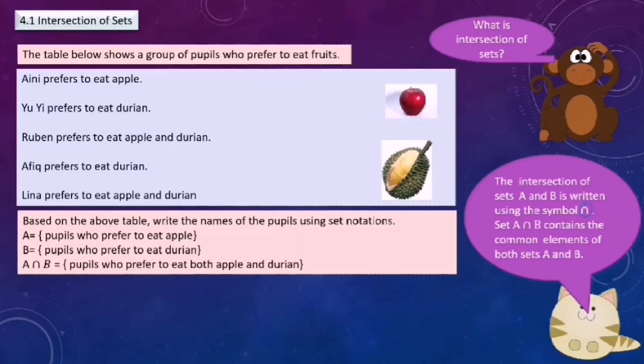We represent set A as pupils who prefer to eat apple. B represents pupils who prefer to eat durian. The intersection of set A and B equals pupils who prefer to eat both apple and durian.